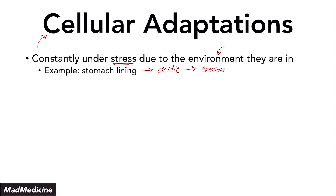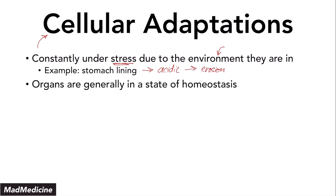Without those adaptations, we would eat through our own stomach lining and our gastric contents and juices would be in our abdominal cavity, leading to infections, sepsis, and death — which obviously doesn't happen. Even though our cells are being stressed and put in stressful environments, our organs are generally in a state of homeostasis. At the microscopic level, some insults are okay, but at the macroscopic level, the organs cannot stop functioning. Otherwise, we would die.